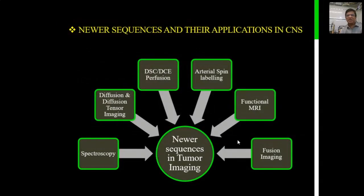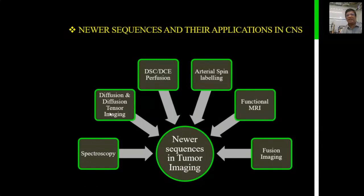The newer MRI sequences that allow better functional information include spectroscopy, diffusion tensor imaging, perfusion imaging, arterial spin labeling, functional MRI, and fusion imaging. In this part of the lecture, we are going to cover only spectroscopy and diffusion and diffusion tensor imaging. The other four sequences will be covered in the next part.